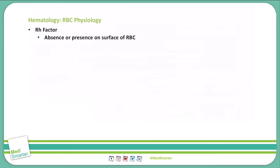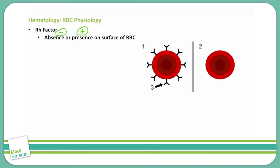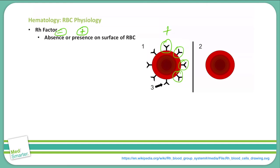Now let's look at the Rh factor. Whenever you know someone's blood type, you will hear AB positive, AB negative, O positive, O negative — the positive and negative refer to the Rh factor. What we're saying is that there is a presence or absence of the Rh factor on the surface of a red blood cell. If there is a presence of the Rh factor, this will be a positive; if there is an absence, then it is a negative. Looking at the diagram, number one shows Rh factors on the surface of the red blood cell, so this will be a positive, and the other shows nothing on the surface, so this is a negative.